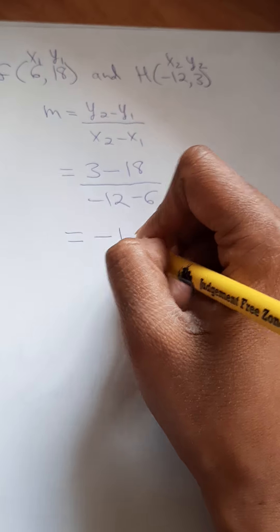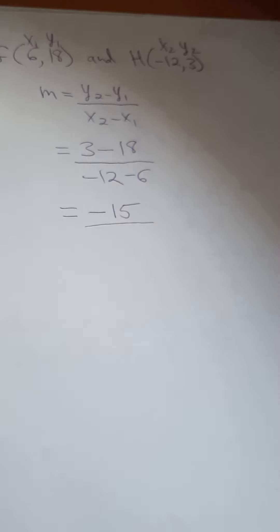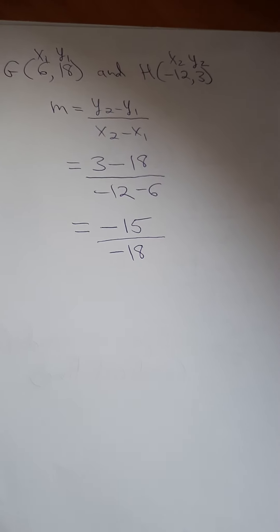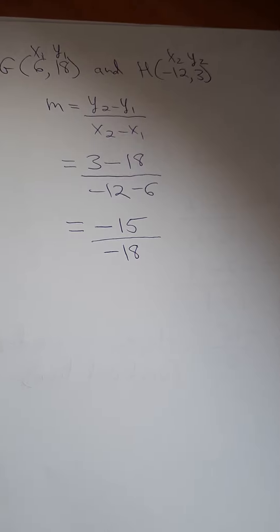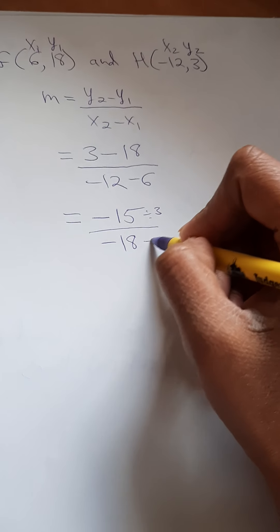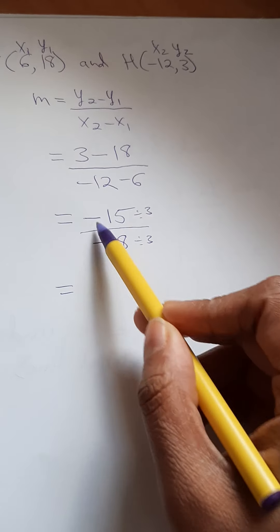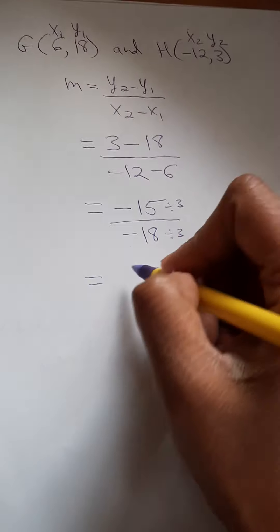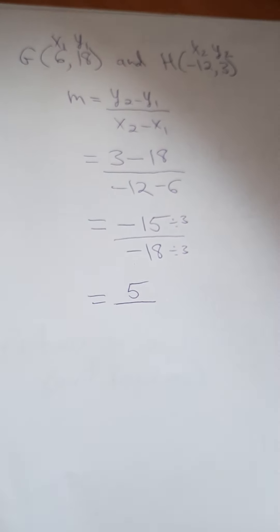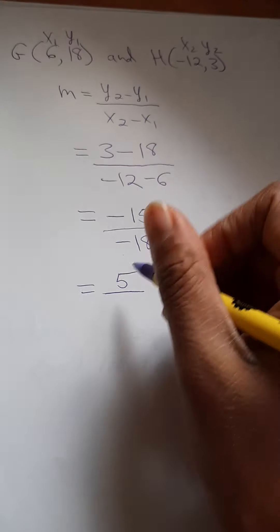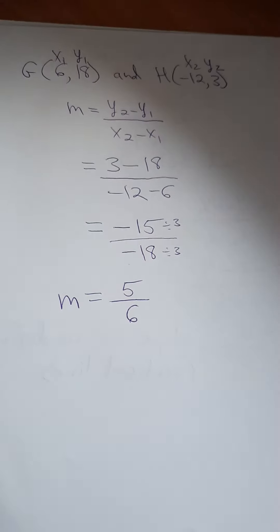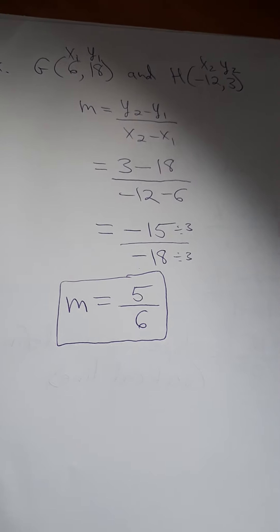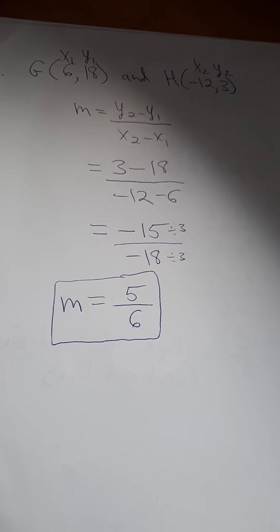So this gives us -15 on top, and -12 minus 6 which is -18 on the bottom. We're just going to reduce this. The two negative signs cancel out, so we're doing 15 divided by 3 which is 5, and 18 divided by 3 which is 6. So the slope is equal to 5 over 6.